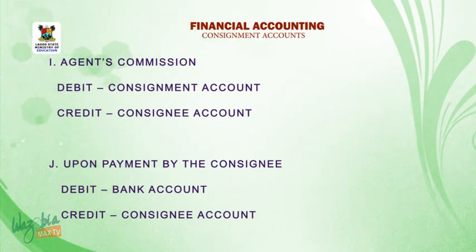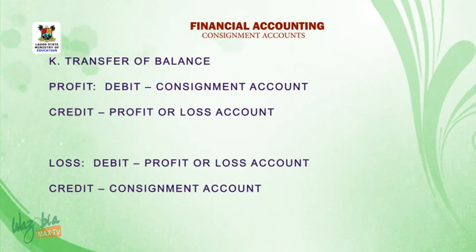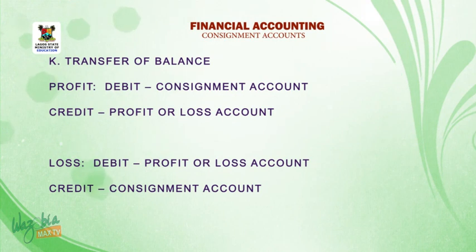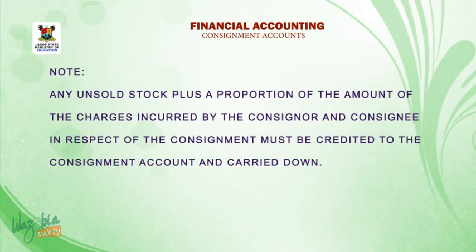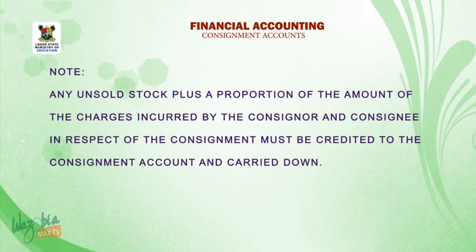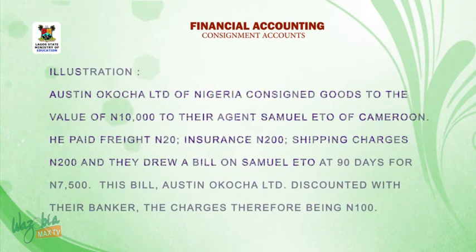J, upon payment by the consignee: debit bank account, credit consignee account. K, transfer of balance — profit: debit consignment account, credit profit or loss account. Loss: debit profit or loss account, credit consignment account. Note: any unsold stock, plus a proportion of the charges incurred by the consignor and consignee in respect of the consignment, must be credited to the consignment account and carried down.